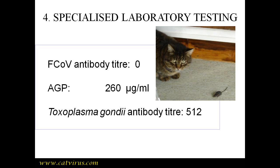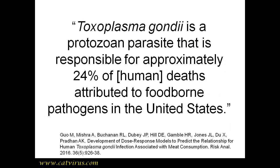Remember, in the first video of the series we saw Tommy with the mouse. I cannot emphasize enough the importance of getting a full and thorough history. Any cat who has access to outdoors, especially in a rural area, has a chance of becoming infected with toxoplasma. Similarly, any animal who gets fed raw meat is at risk of toxoplasmosis - and I include the human animal in this. Guo et al. stated that Toxoplasma gondii is a protozoan parasite responsible for approximately 24 percent of deaths attributed to foodborne pathogens in the United States - deaths, not illnesses, from eating raw or undercooked meat.